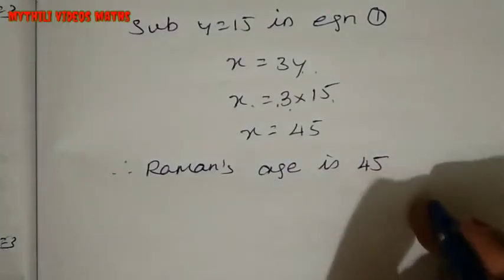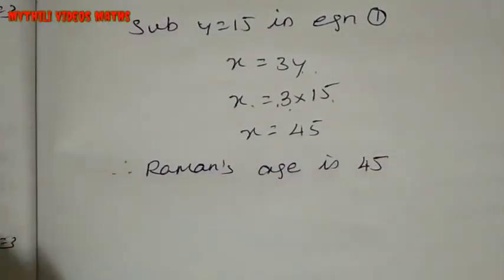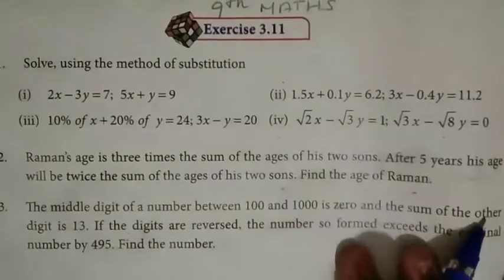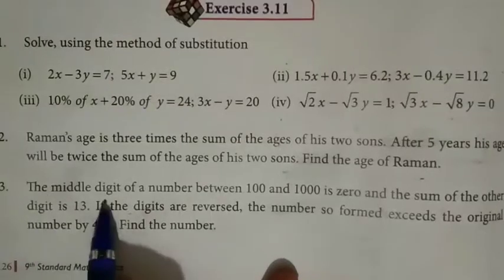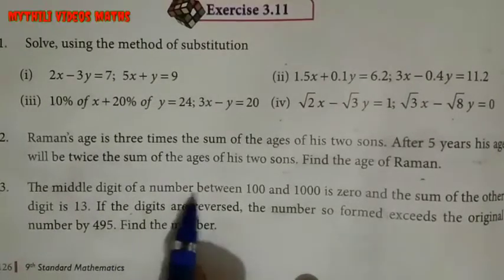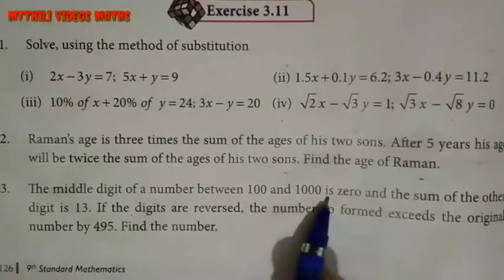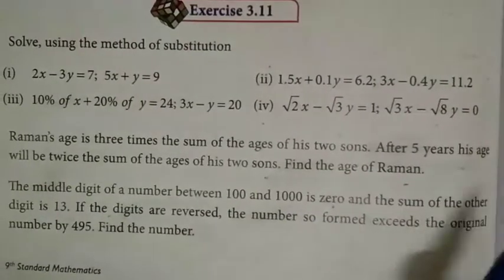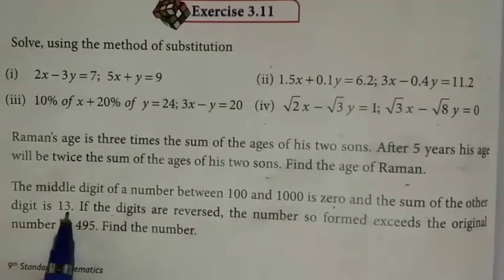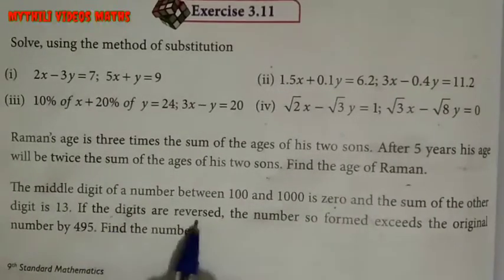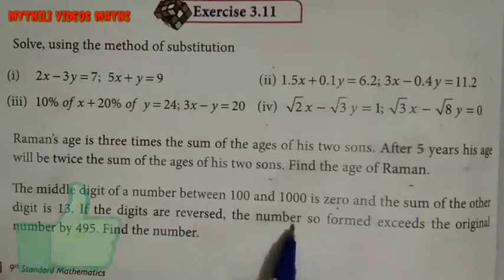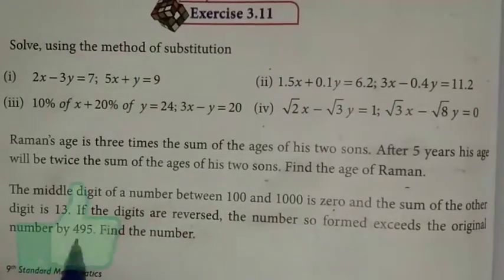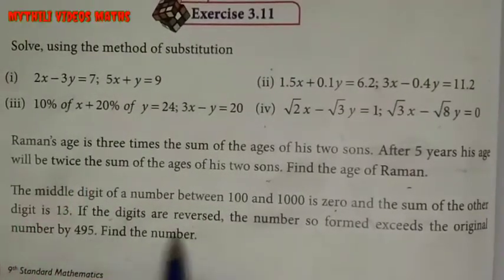Okay, now the third sum. The middle digit of a three-digit number between 100 and 999 is 0, and the sum of the other two digits is 13. If the digits are reversed, the number so formed exceeds the original number by 495. Find the number.